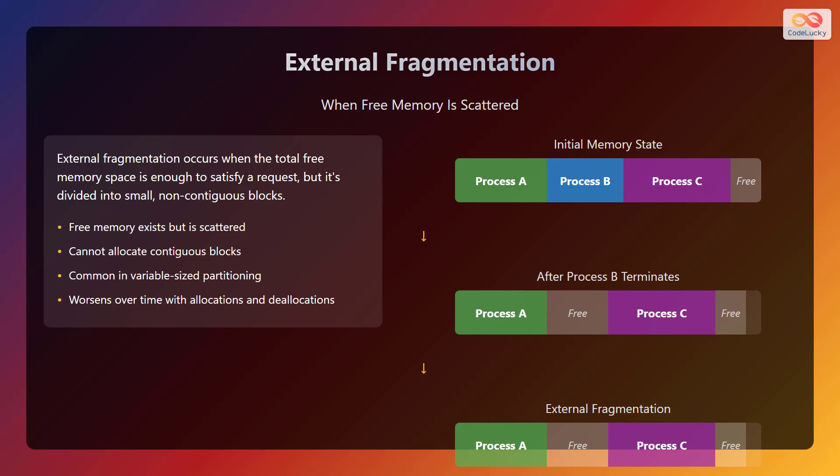External fragmentation occurs when the total free memory space is enough to satisfy a request, but it's divided into small, non-contiguous blocks. Free memory exists but it is scattered, and it cannot allocate contiguous blocks. It is common in variable size partitioning and worsens over time with allocations and deallocations.